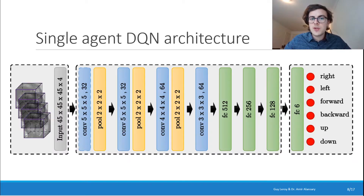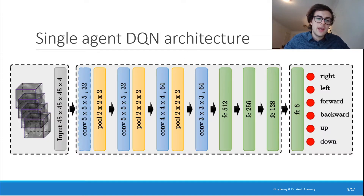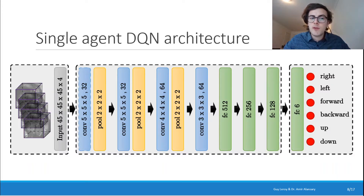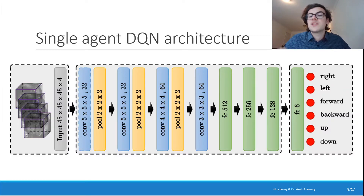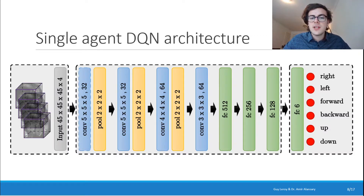Here is the deep Q-network architecture of the single agent. The deep Q-network is a neural network that predicts the Q values for an agent in a certain state. The state — what the agent can see — is a 45 by 45 by 45 voxel cube. We have four of them because they represent the agent's four previous steps, allowing it to have a better sense of movement. This deep Q-network has convolutional layers and fully connected layers that end with six scalars, each representing the Q value for each of the six possible actions.